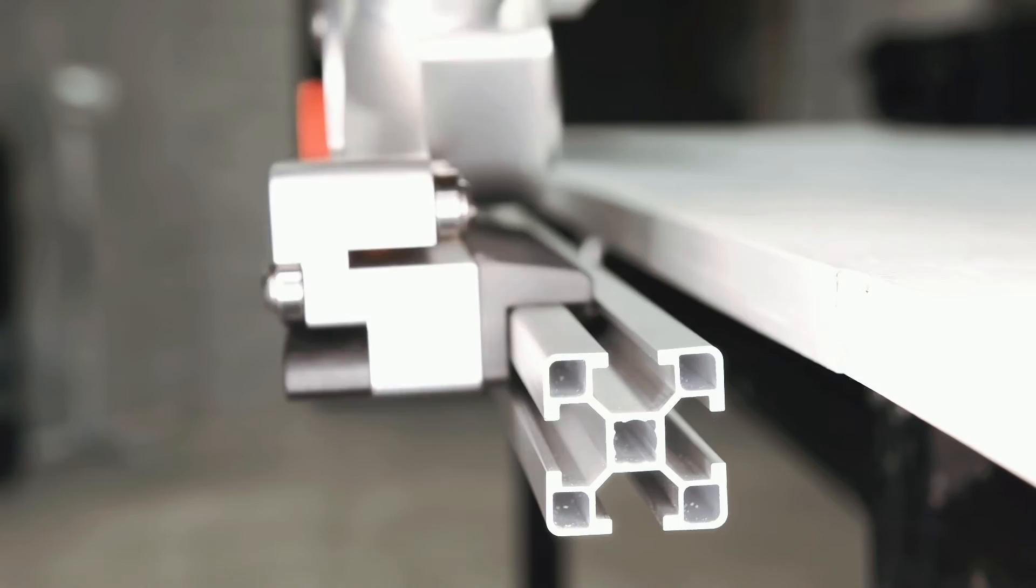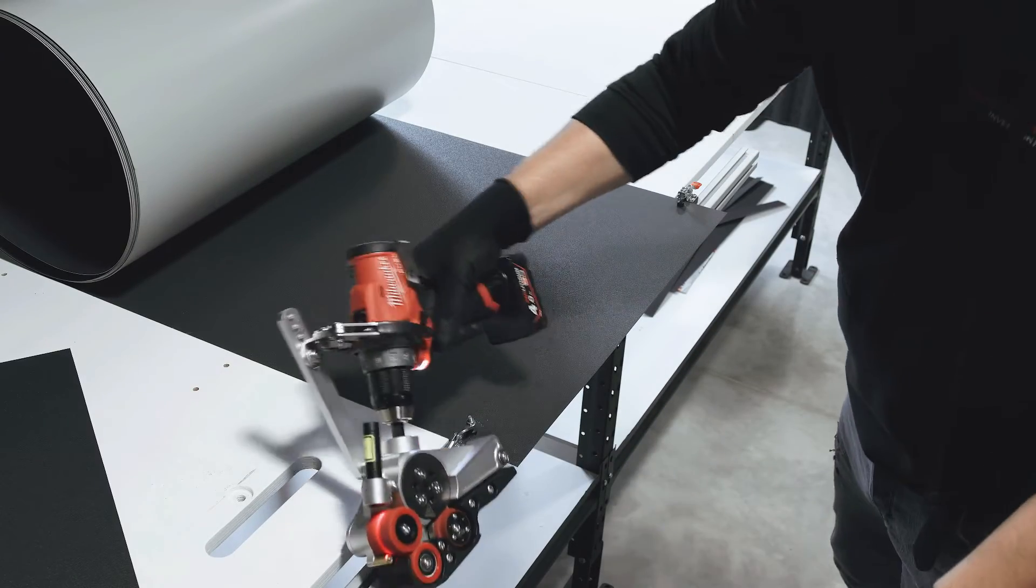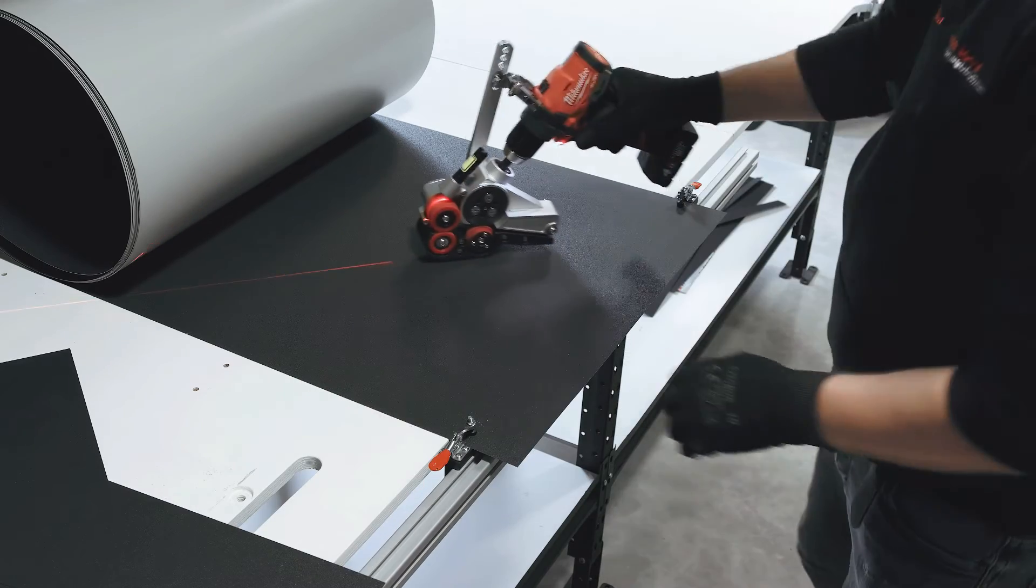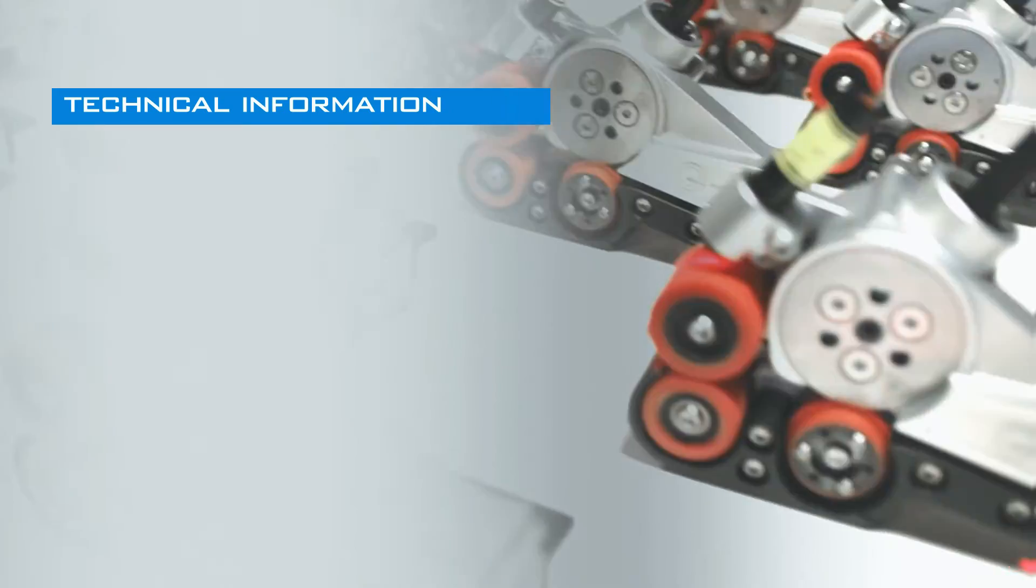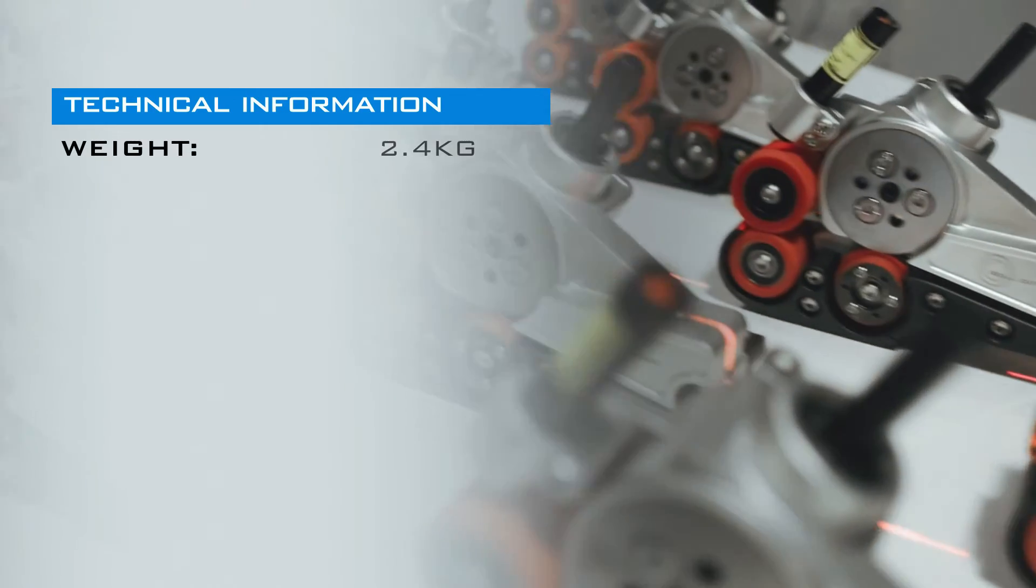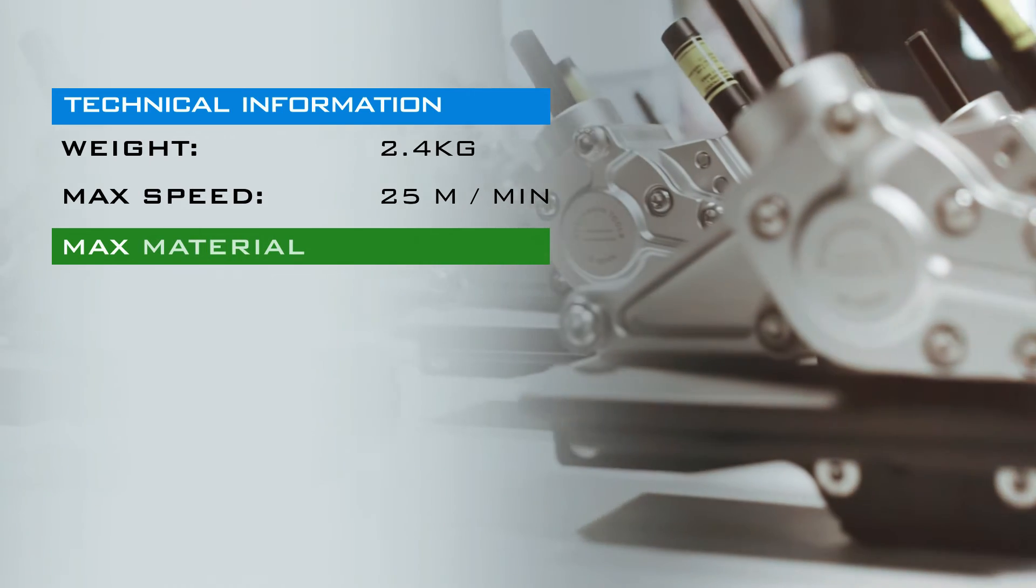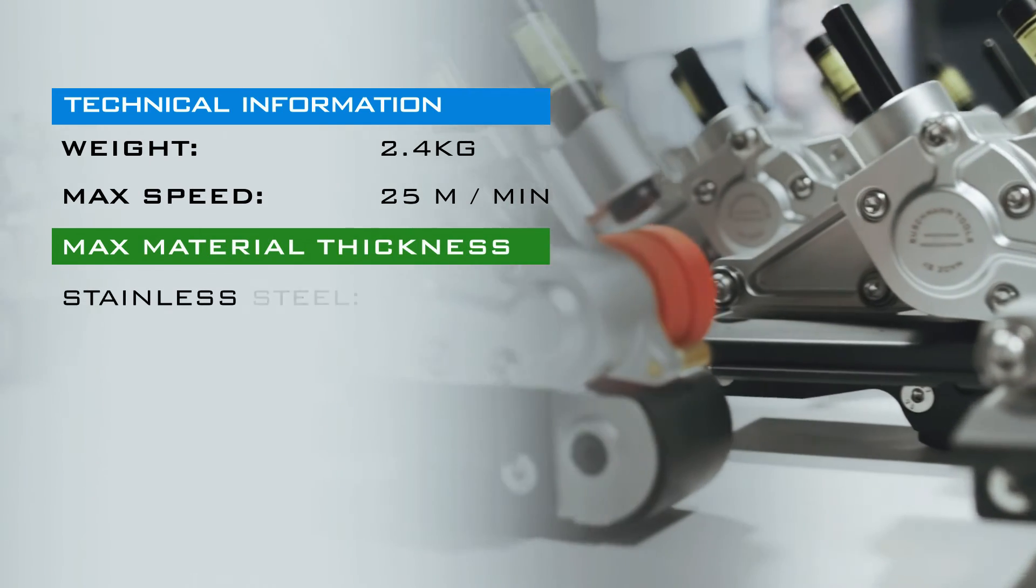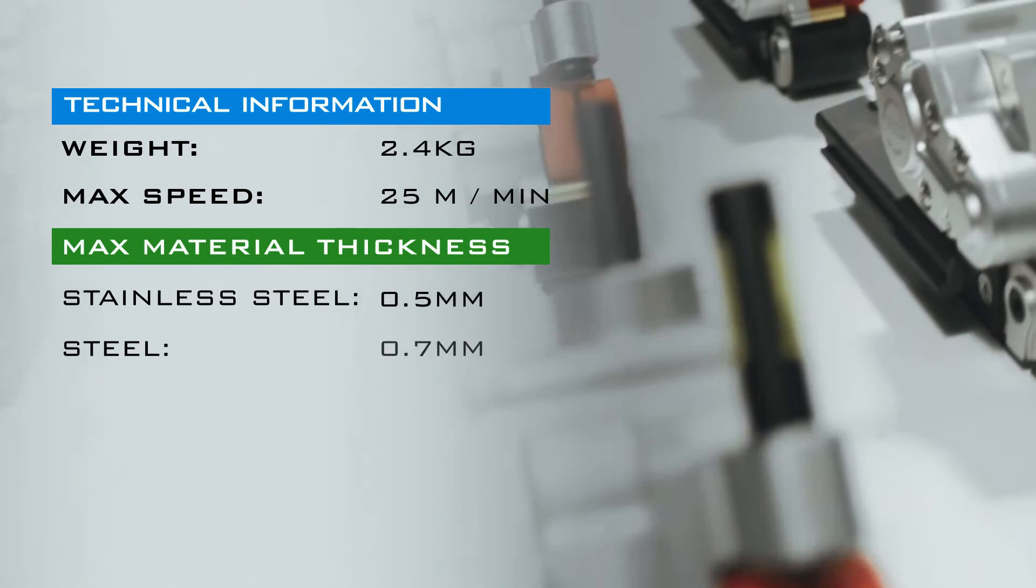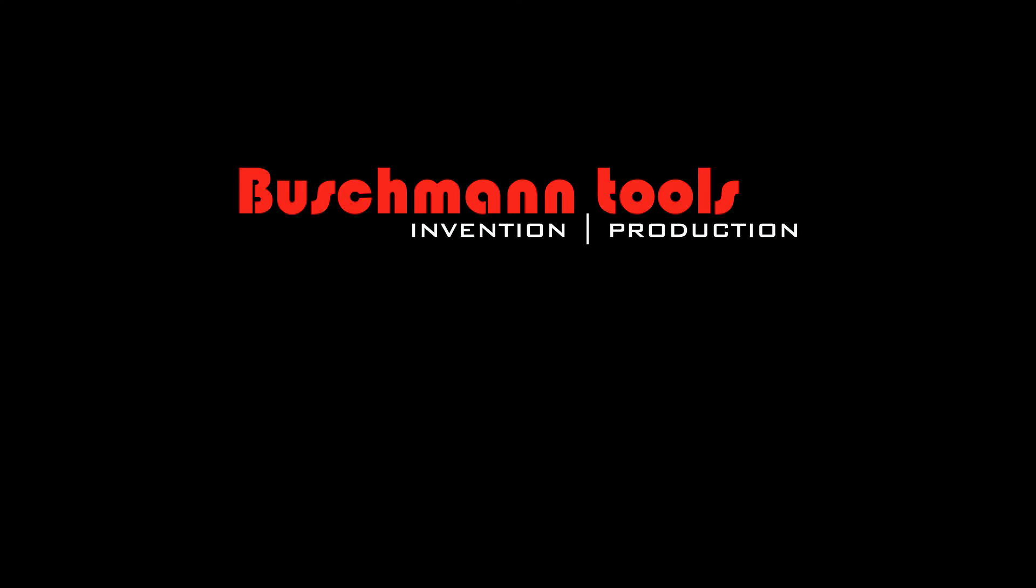Roll cutter technical information: weight 2.4 kilograms, maximum cutting speed 25 meters per minute. The maximum material thickness ranges from 0.5mm to 0.8mm depending on the material type.